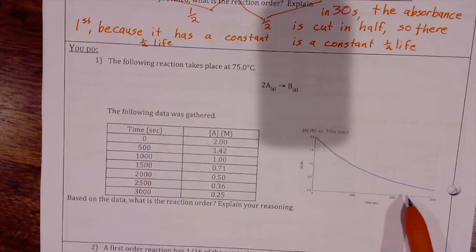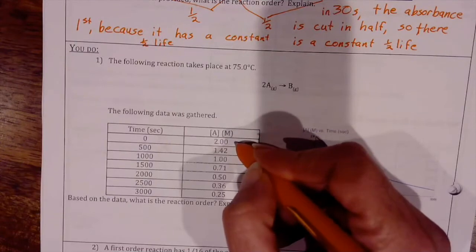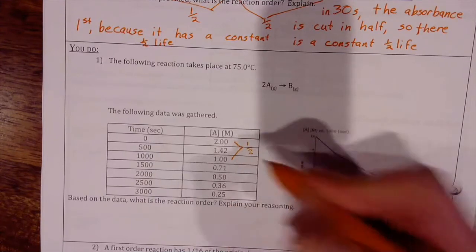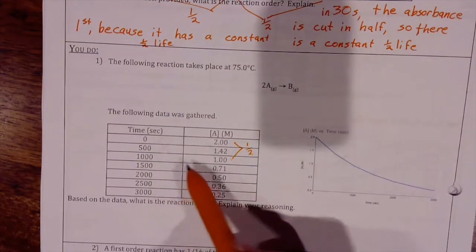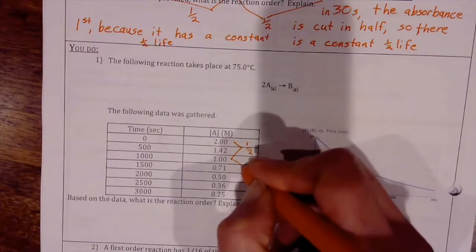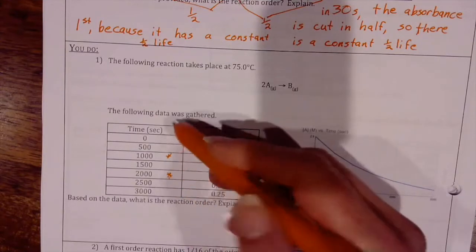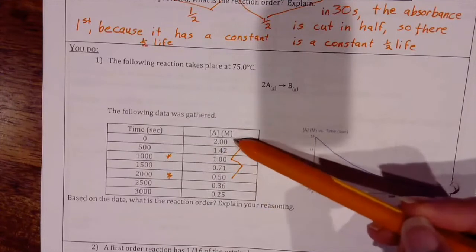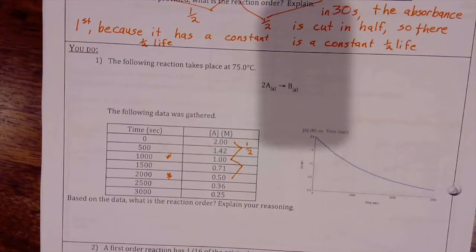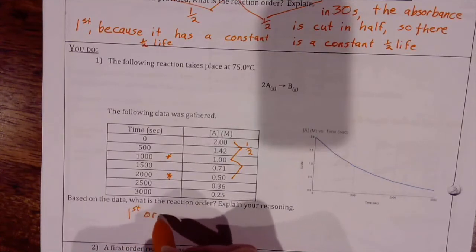The next thing I'm going to look at is, does it have a constant half-life? I can see that at this time the concentration is two, and right here the concentration is one. So that's half, the concentration decreased by half in that thousand seconds. It goes from one to 0.5 between here and here, one at a thousand seconds and 0.5 at 2,000 seconds. So it has a constant half-life of 1,000 seconds. That tells me this is a first order reaction, because it has a constant half-life.